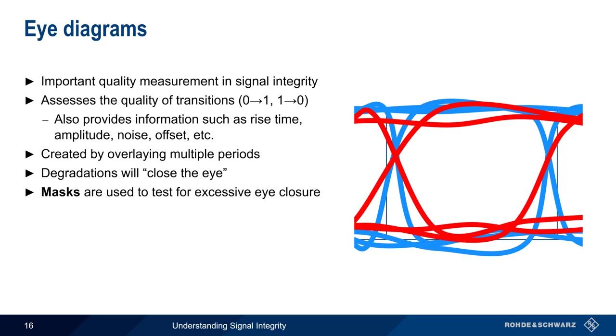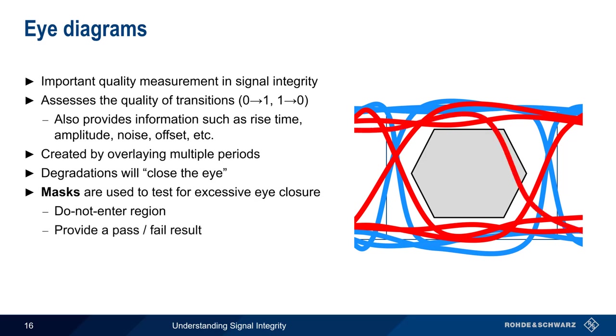A mask is defined as a region or regions where the signal should not enter, and a failure can be defined as any time the mask is violated. Eye diagrams and masks are fundamental tools in signal integrity testing, and therefore standards will often specify the characteristics of the mask to be used during testing.